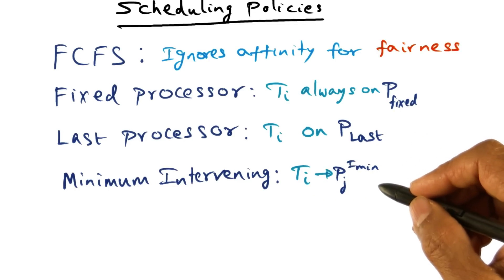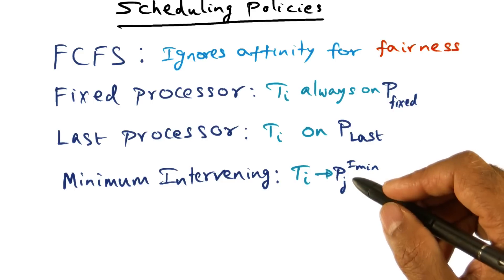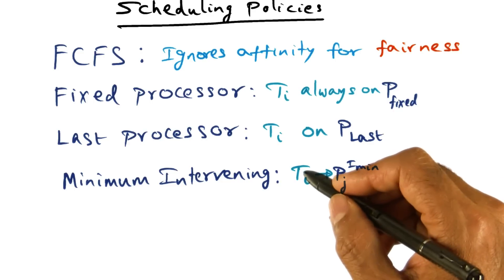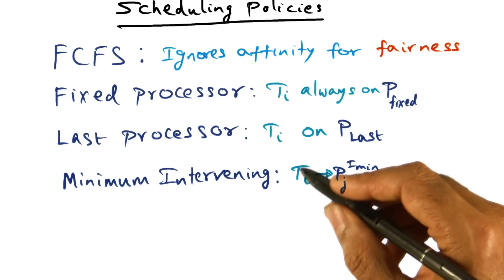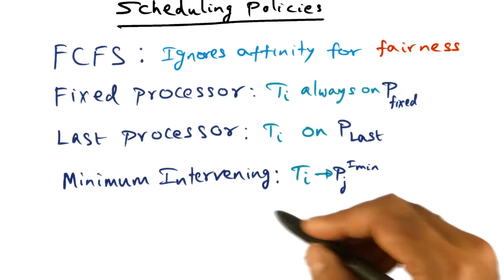So that's your minimum intervening scheduling policy that is ensuring that the processor that is picked for TI to run on has the highest affinity for TI. That's the minimum intervening.